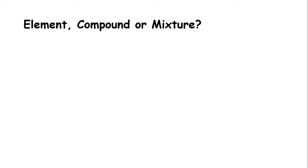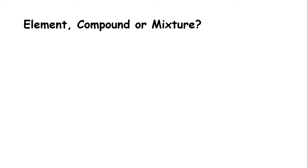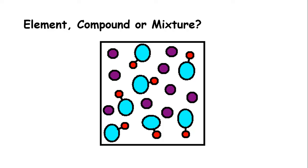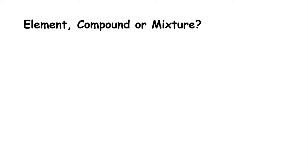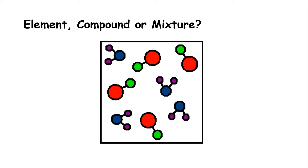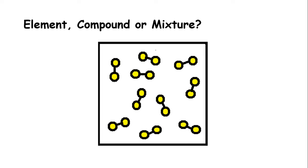Next one. Element, compound, or mixture. It's a compound. Two or more different atoms joined together makes a compound. Element, compound, or mixture. Mixture. Element. I see only one type of atom, which makes it an element.